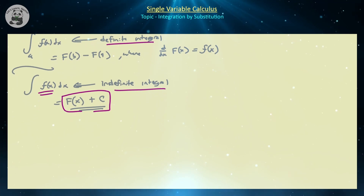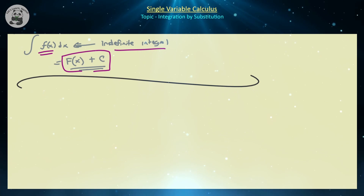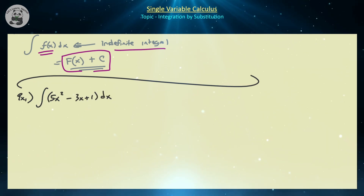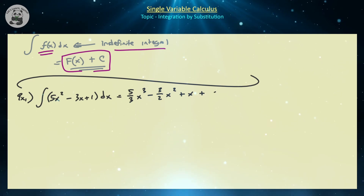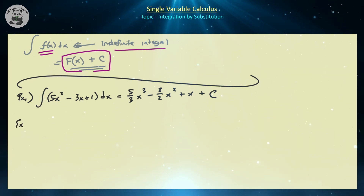Let's do a couple examples to review some principles we've discussed. Example one: what is the indefinite integral of 5x² minus 3x plus 1 dx? Using our power rule, that's just going to be equal to five-thirds x cubed minus three-halves x squared plus x plus some constant, because the derivative of any constant would be zero, so when we go backwards we need a plus c.